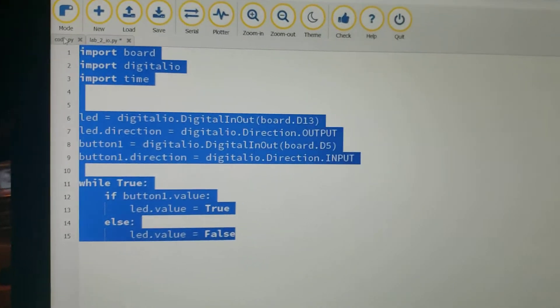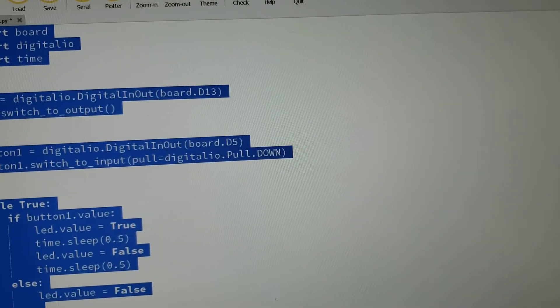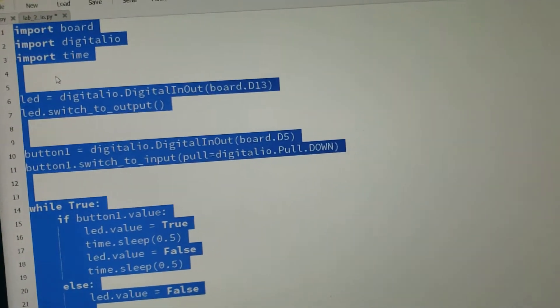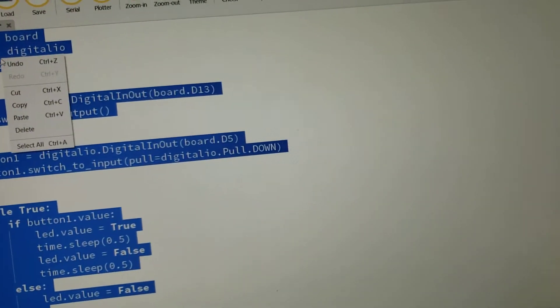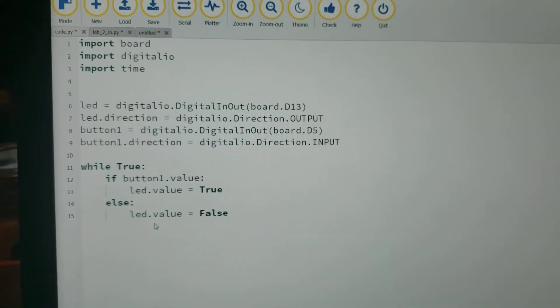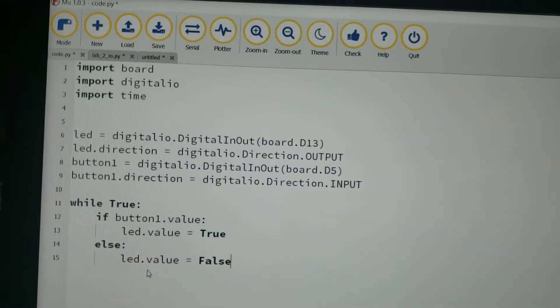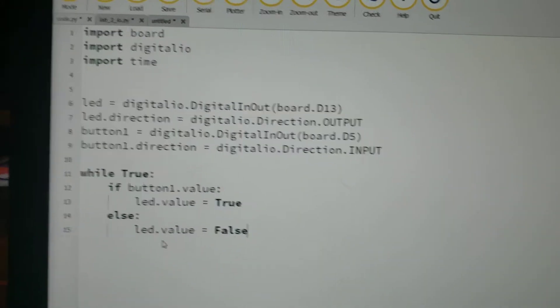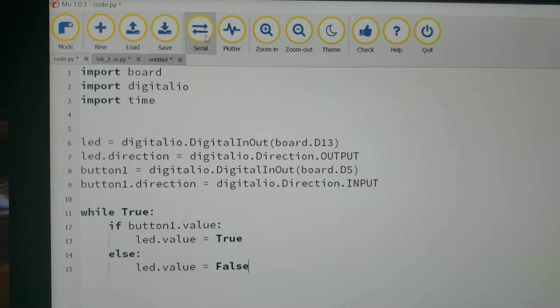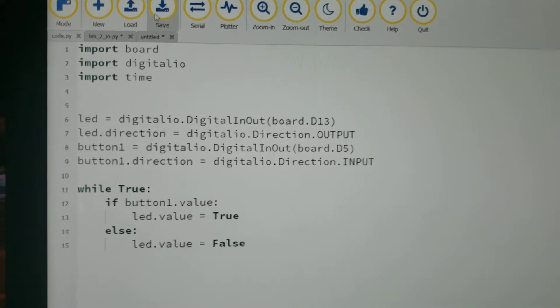So let's copy this and stick it into the actual code. Actually, let me save this here. Copy. Alright, I've got the defunct code, the code that wasn't working, without the debounce, and we're going to save it into the microcontroller here.